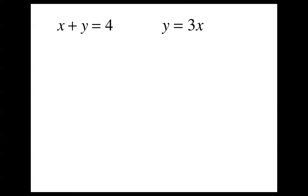Here's a system of equations: x plus y equals 4, and y equals 3x. Spoiler alert — I'm going to give you the solution before we even solve this. If x plus y equals 4, you have to think of two numbers that add up to 4, but since y equals 3x, one of the two numbers has to be triple the other. Well, 1 and 3 are the two numbers. We're going to remember that's the solution, but I'm going to show you how to figure that out using the graphing method.